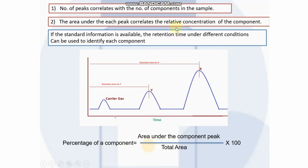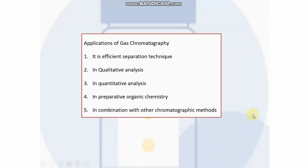The area under a particular peak can be calculated using peak height multiplied by peak width at half its height. Using this, the percentage of any component can be calculated.